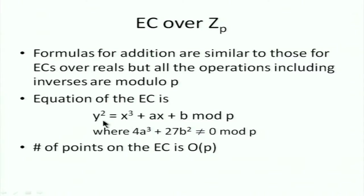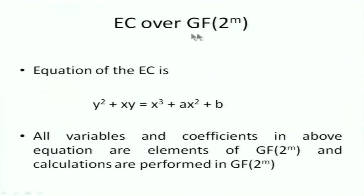The equation is also the same: y² = x³ + ax + b, but we use modulo p. This field has p elements from 0 to p−1, and 4a³ + 27b² ≠ 0. The number of points on the elliptic curve is order p. For binary fields, we consider large fields — m would be something like 300 bits, so GF(2^300). The equation is slightly different: y² + xy = x³ + ax² + b, and all variables and coefficients are elements of this field, with addition and multiplication being field operations, not normal arithmetic.